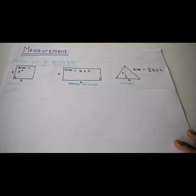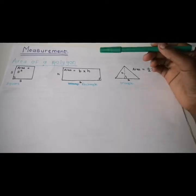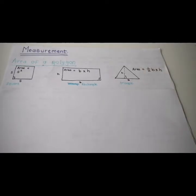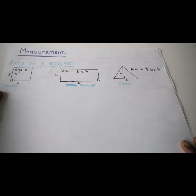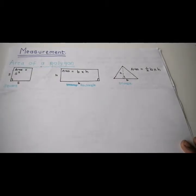In this video we'll be discussing measurement, starting with the area of a polygon. I'm starting with the assumption that none of you will judge my drawing throughout the video — this is not about the drawing. The area of a square is side times side, or side squared. The area of a rectangle is breadth times height, or length times breadth.